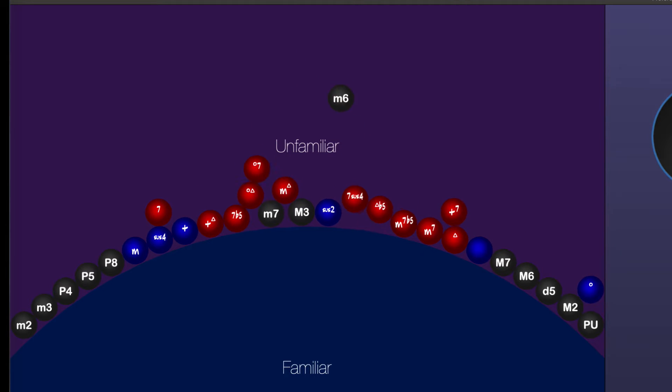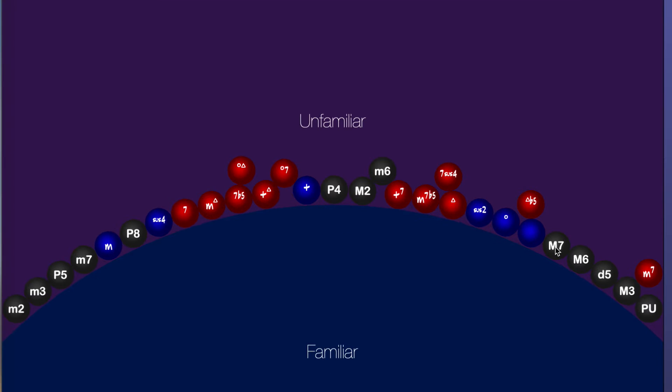They're being played as you can hear them falling onto screen. Now that we're starting from scratch, all of our intervals and triads and seven chords are in this unfamiliar territory up at the top, and our goal is to move them down into familiar and hopefully eventually proficient. If I click on any of the spheres, I can hear the interval or chord that it represents, and right now it's set